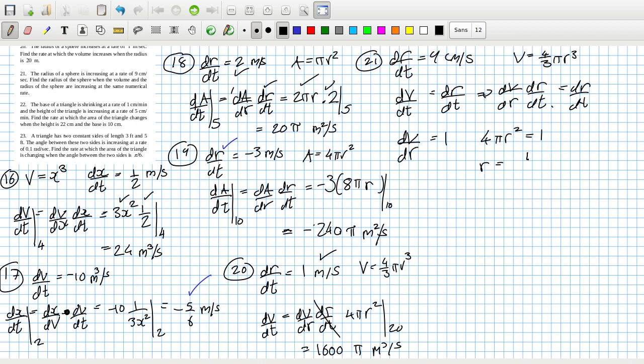And dv dr will be 4 pi r squared. When will that equal 1? So that's when the radius is equal to 1 over 4 pi root. So that's 1 over 2 root pi meters. Definitely want to check the answer for that one.